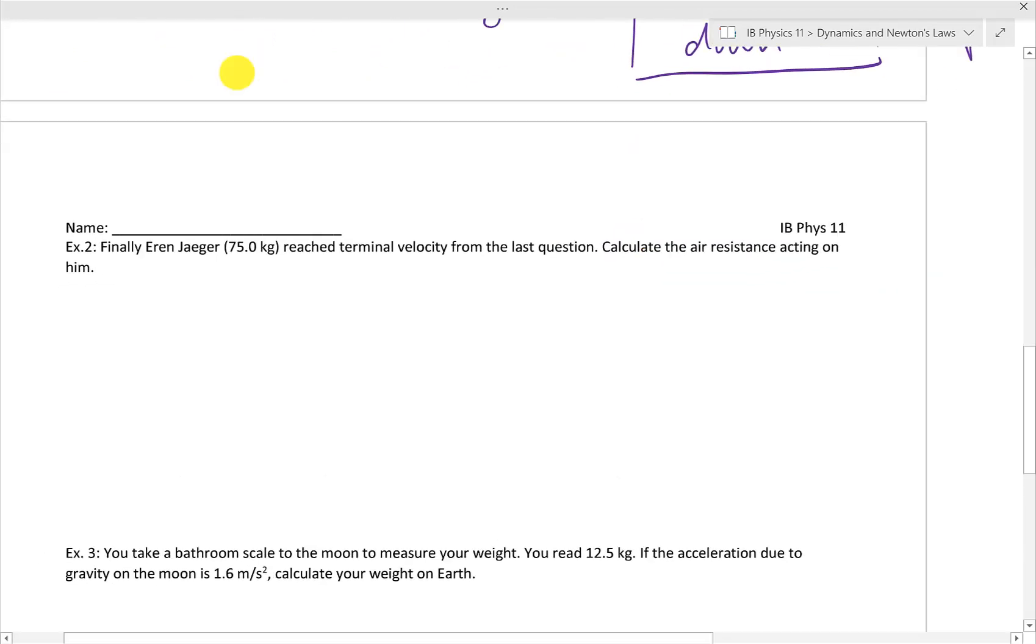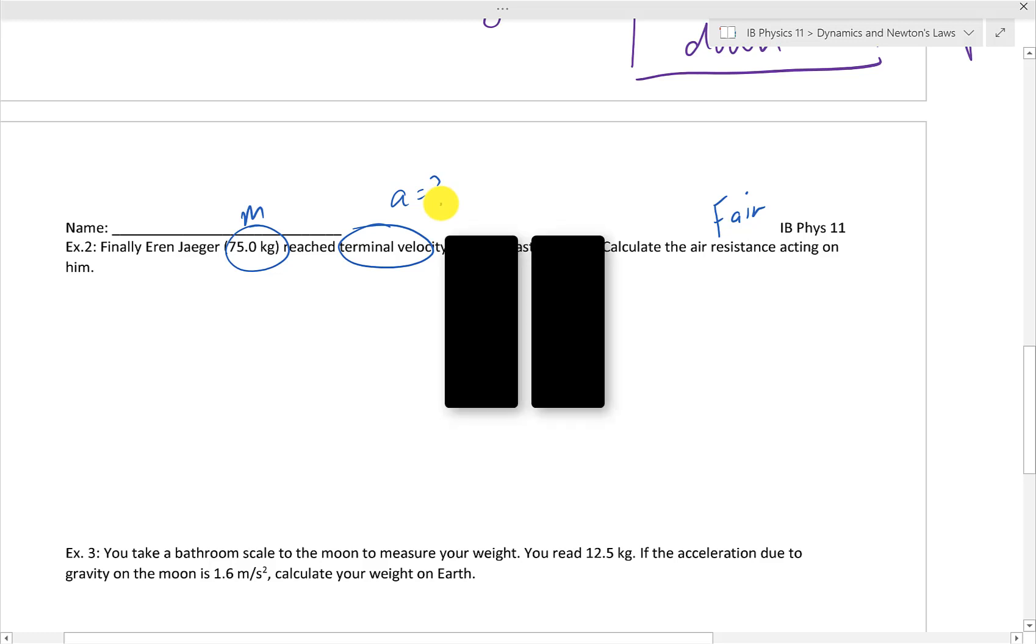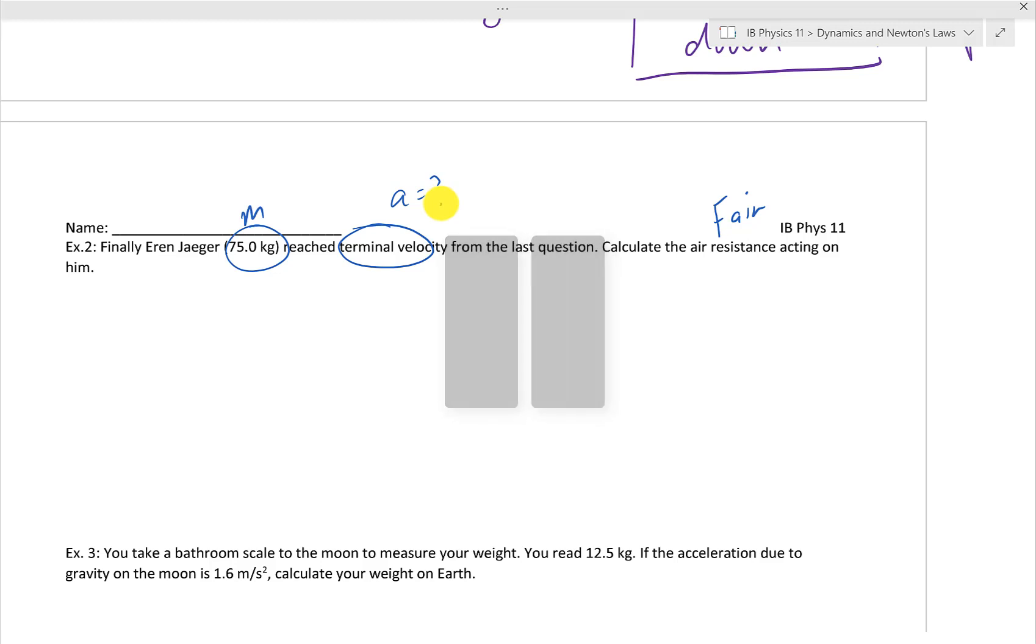So now it's time for you to try example two. Let's just make sure you understand the problem. Finally, Aaron Jaeger, his mass, reaches terminal velocity from the last question. Calculate the air resistance acting on him. So we're using a very similar setup in the previous question, but now he has reached terminal velocity. And that's going to tell you something about the acceleration. So good time to pause the video. And here I go with the solutions.